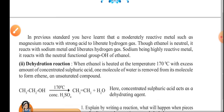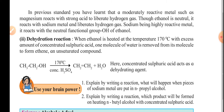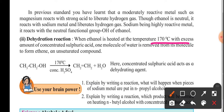The next topic is the dehydration reaction. When ethanol is heated at 170°C with excess concentrated sulfuric acid, one molecule of water is removed to form ethene, an unsaturated compound. So the dehydration of ethanol in the presence of concentrated sulfuric acid at 170°C forms ethene along with a water molecule.